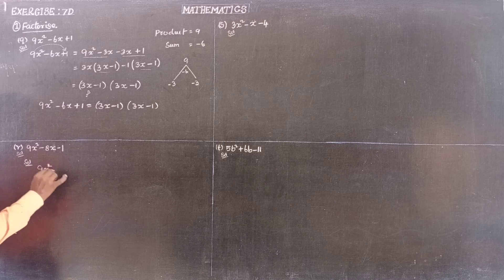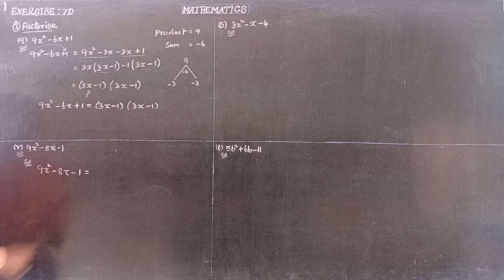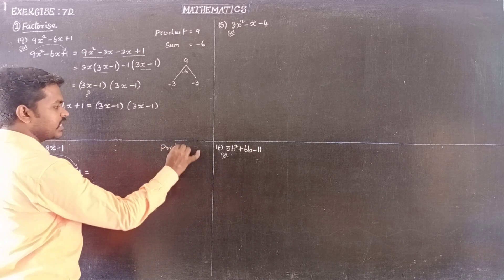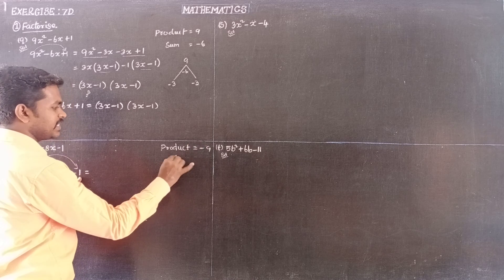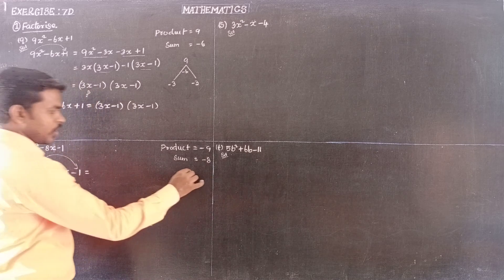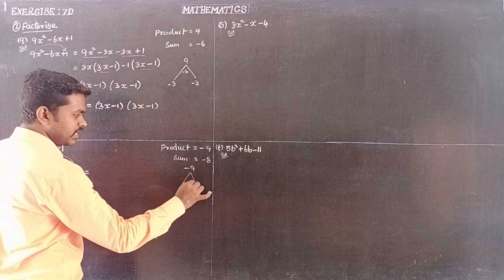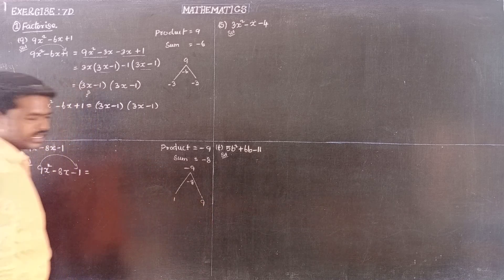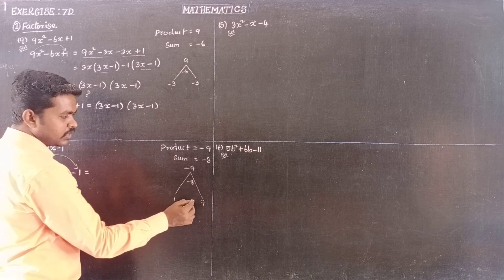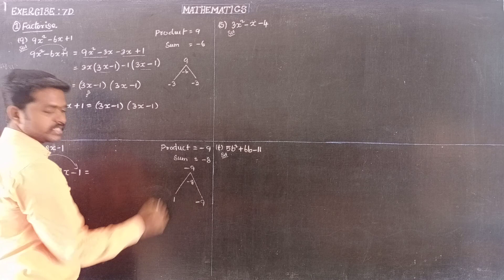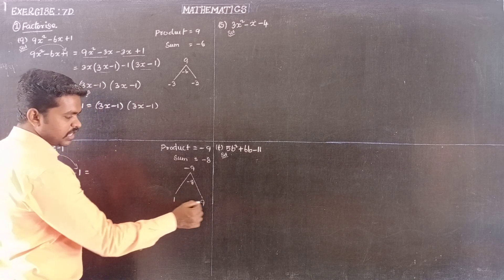The next subdivision is 9x squared minus 8x minus 1. The two numbers must have a product equal to 9 times minus 1, which is minus 9, and their sum must equal the middle term coefficient, minus 8.